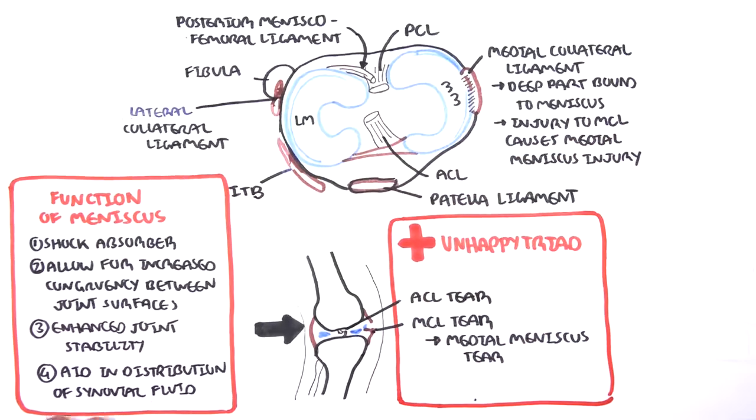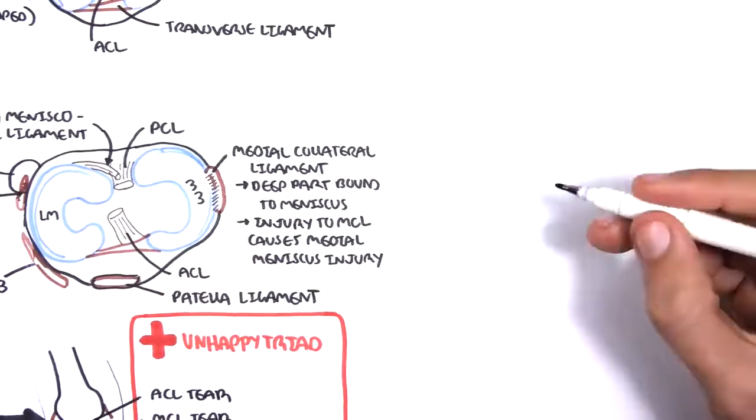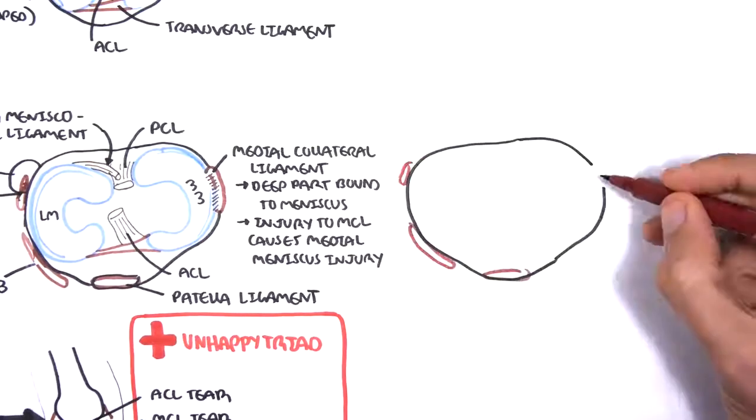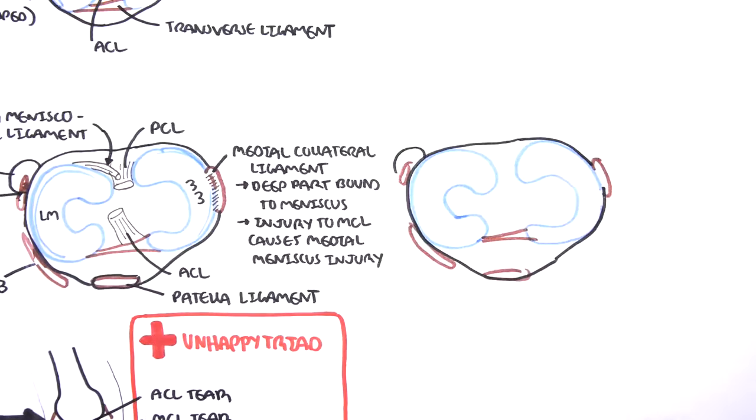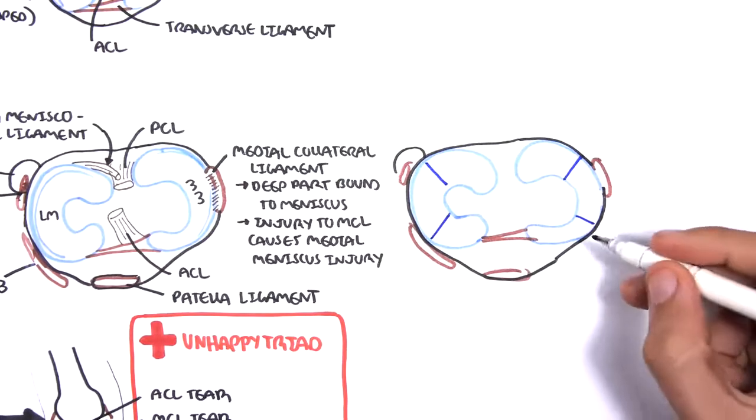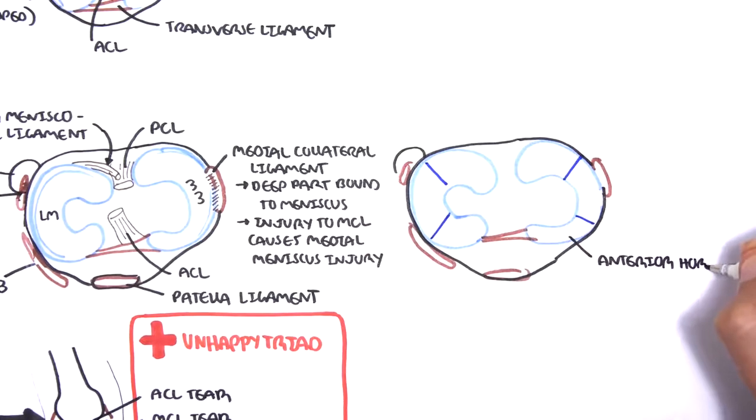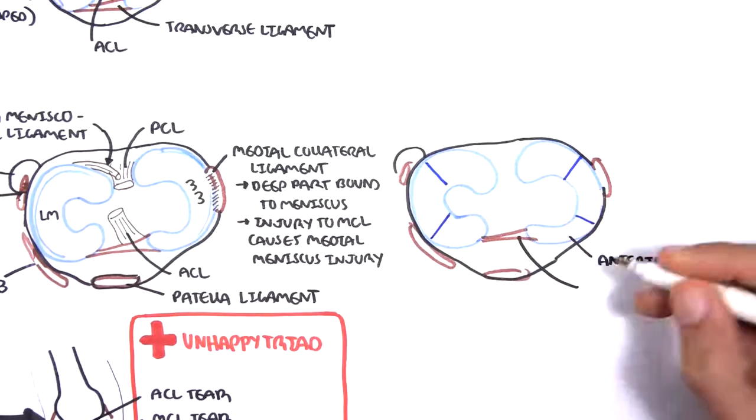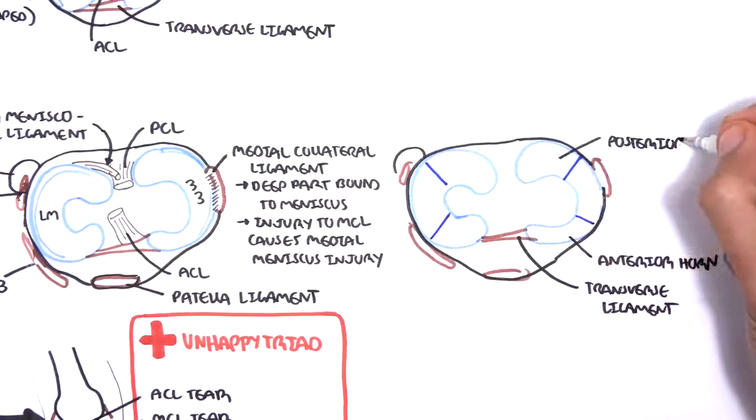Finally, again drawing the same image looking at the right tibia from the superior view, we can see the menisci again. The menisci can be divided into three sections. The anterior part are the anterior horns. The anterior horns are connected by the transverse ligament. But this is only seen in some people, not all. Then you have the posterior horns at the back.